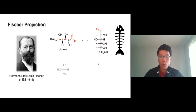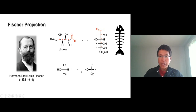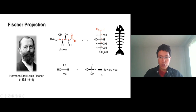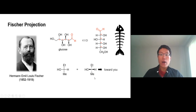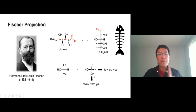Let's talk about the Fischer projection quickly. You're going to see two lines — horizontal and vertical. The meaning is: the horizontal line is pointing towards you. Both the OH group and the hydrogen on the horizontal line are pointing toward you, while the ethyl and methyl groups on the vertical line are pointing away from you.